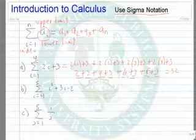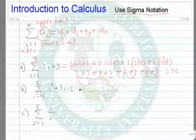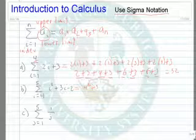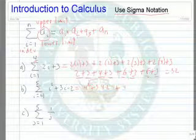Suppose we have something a little more complicated, i squared plus 3i minus 2. Notice we start with i equal 4, which is unusual. So we take 4 squared plus 3 times 4 minus 2. To that we'll add, we increment up to 5, so we take 5 squared plus 3 times 5 minus 2.